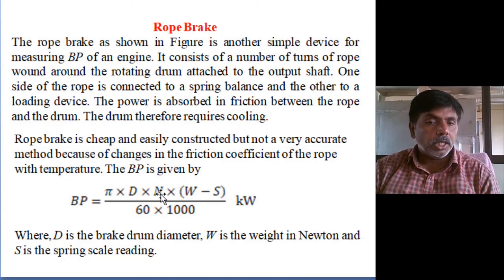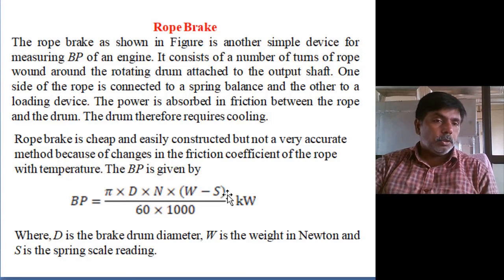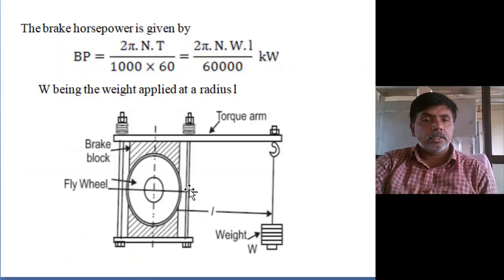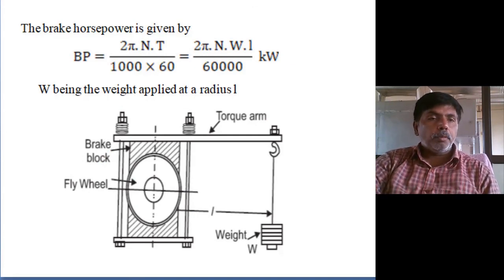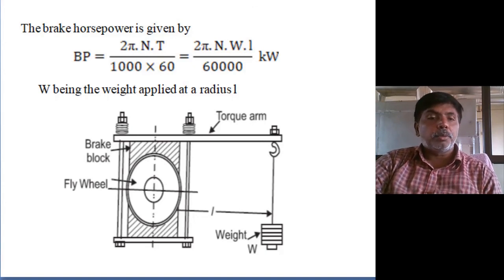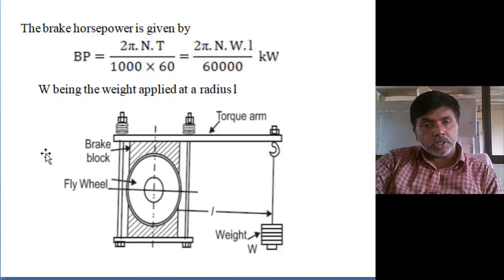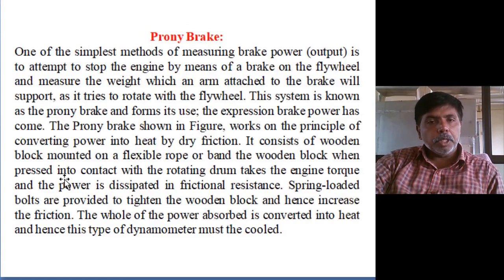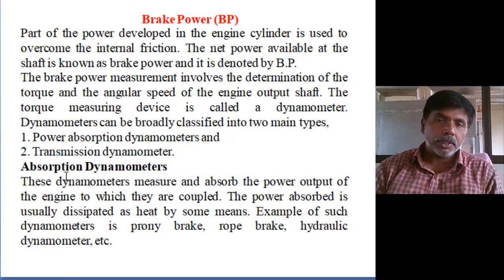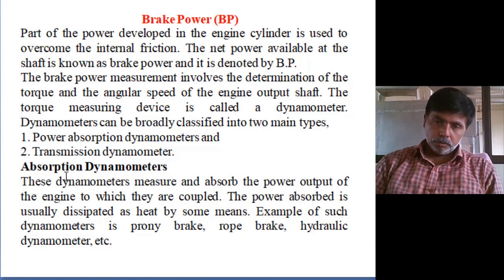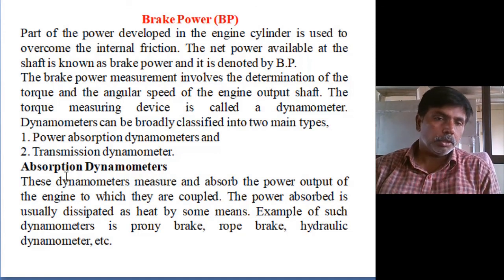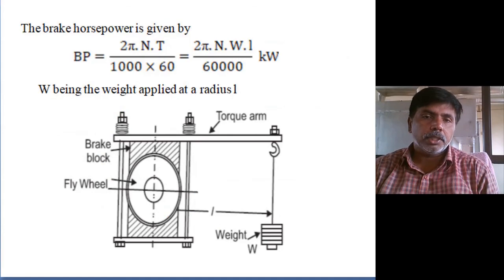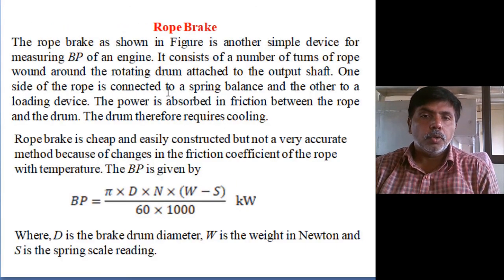If load is in Newtons, then divide by 1000; if speed is in RPM, then divide by 60. The equation of brake power is π × D × N × (W − S). These two methods — prony brake and rope brake — are general methods for measurement of brake power, though exact values may not always be obtained. The majority of testing laboratories use these two instruments for measurement of any type of engine — two-stroke or four-stroke, SI or CI engines.